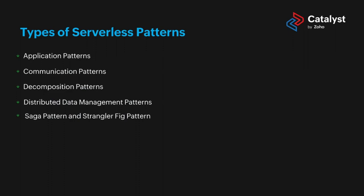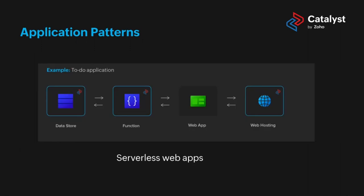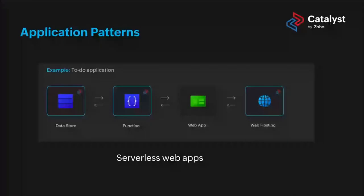Let's go ahead with application patterns at a comfortable pace. We have multiple types of applications that can be built, and we've covered this in detail on the Catalyst web pages. First, you can build serverless web apps — these are types of applications that can be built using Catalyst. The next time you're building a web application, it would be nice to remember that it's possible in a serverless way as well.